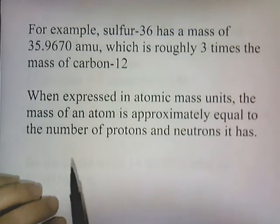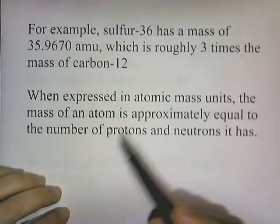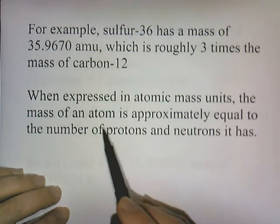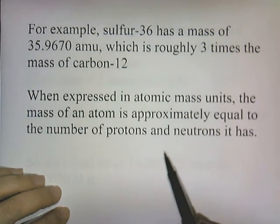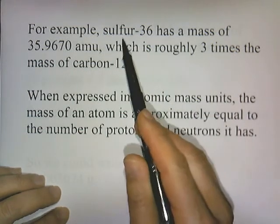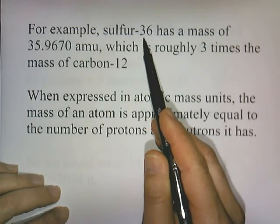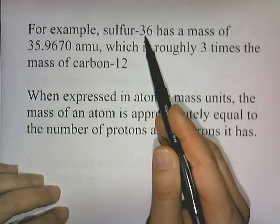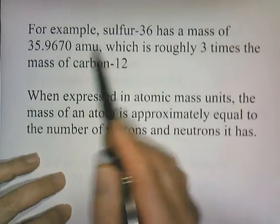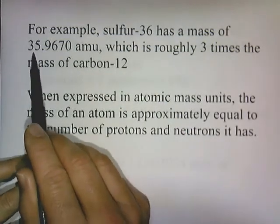Now when expressed in atomic mass units, the mass of the atom is approximately equal to the number of protons and neutrons it has. So sulfur-36 has 36 protons and neutrons, and you notice that its measured mass is 35.9.